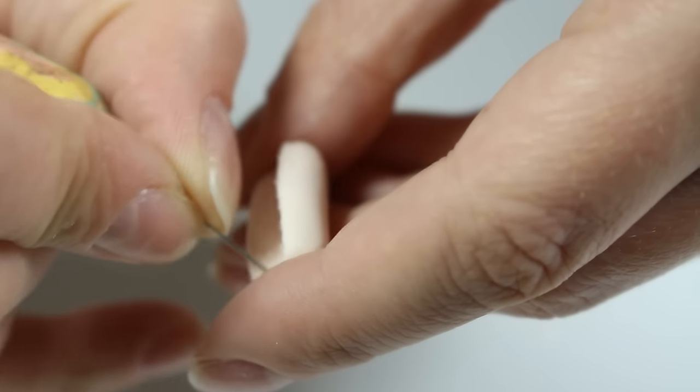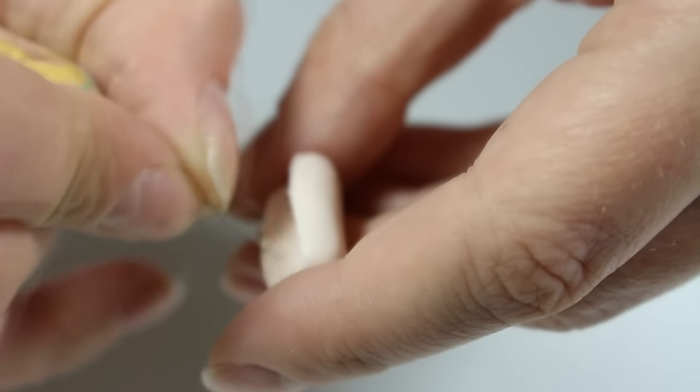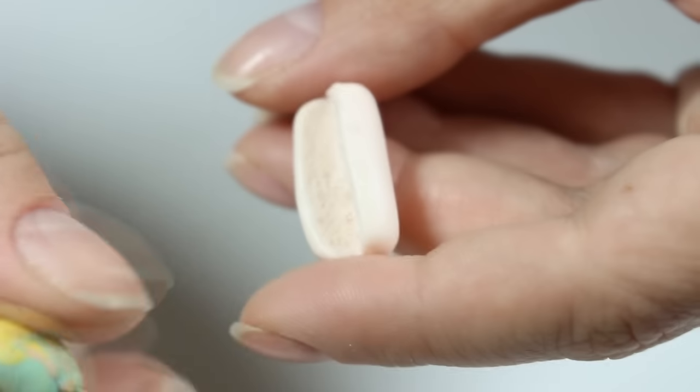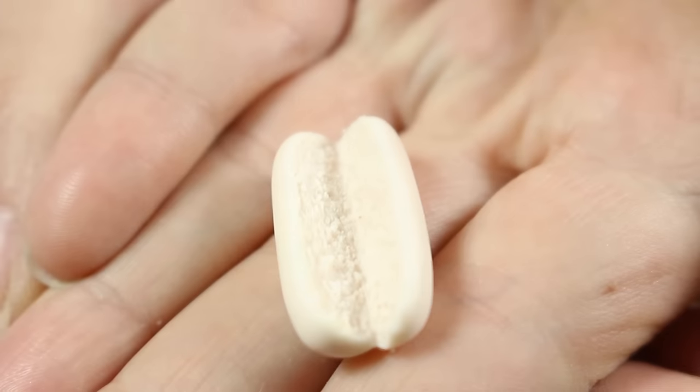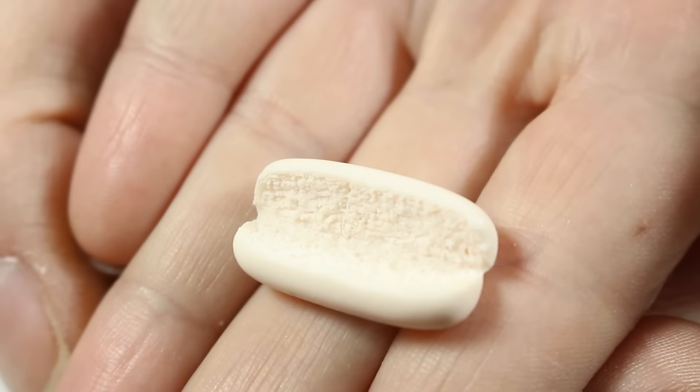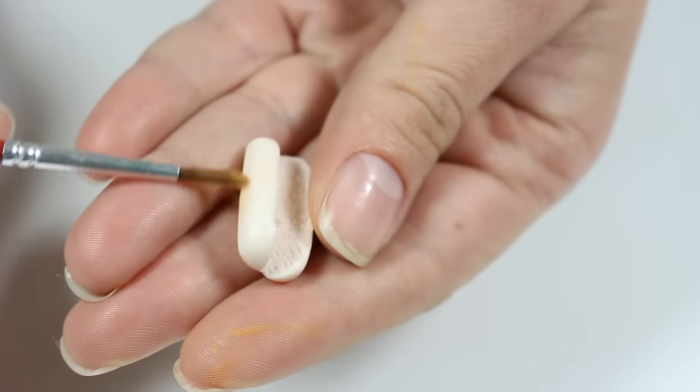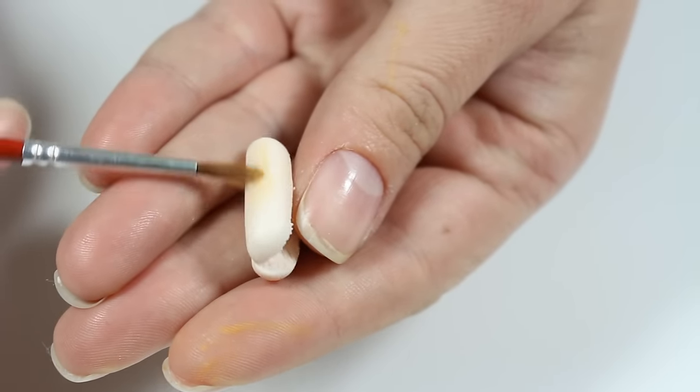Here I'm using my needle tool to texture the inside of the bun. Now I'm using soft pastels and a small brush to shade the hot dog bun.